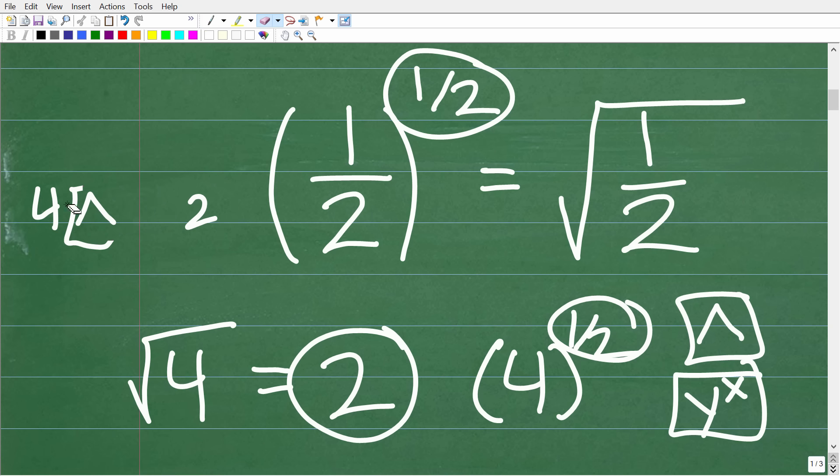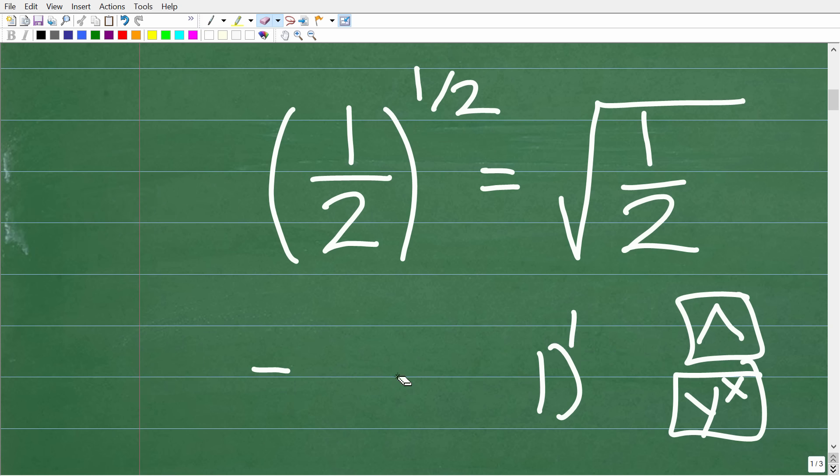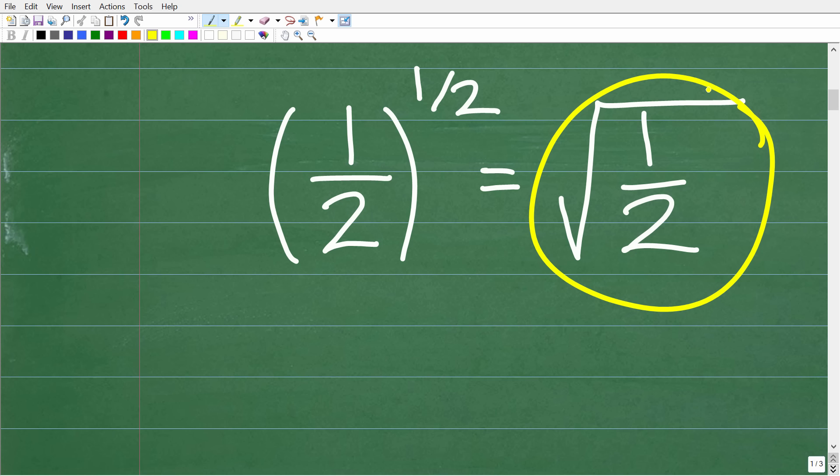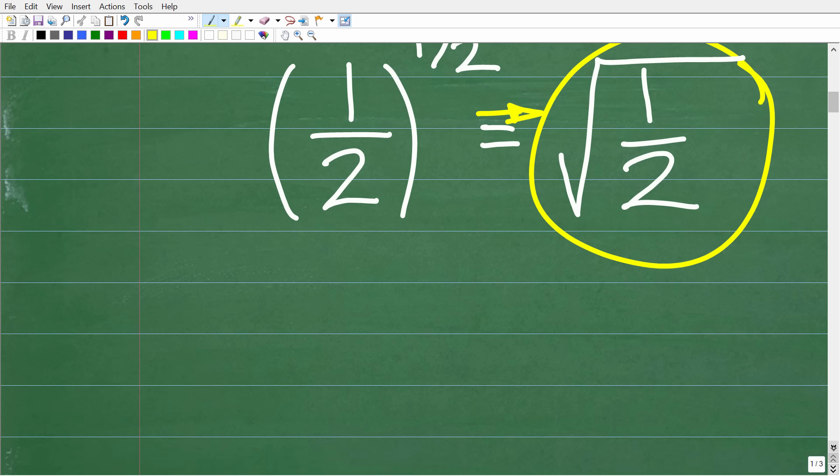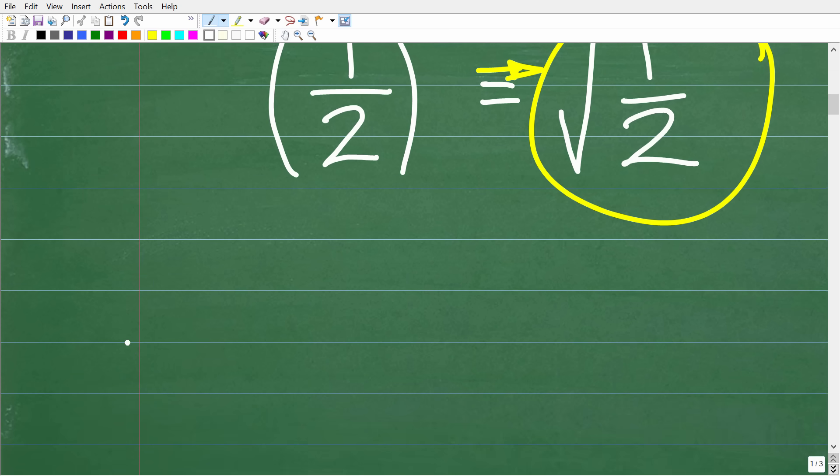Now if you understand that, you might be saying oh excellent, we are done. The answer here is the square root of one half. Well, not so fast, because this is not simplified. If this is your answer, I would maybe give you a B, but what you want to strive for is an A plus because we actually have a problem in mathematics with this written as it is.